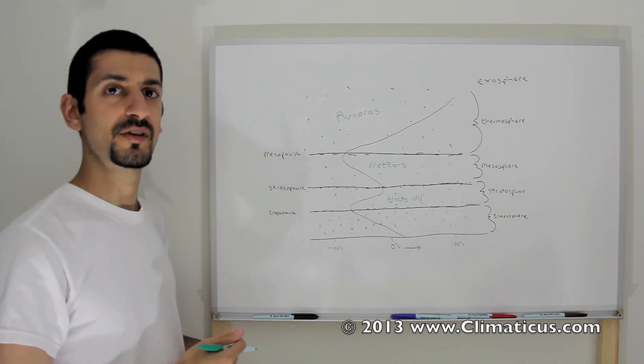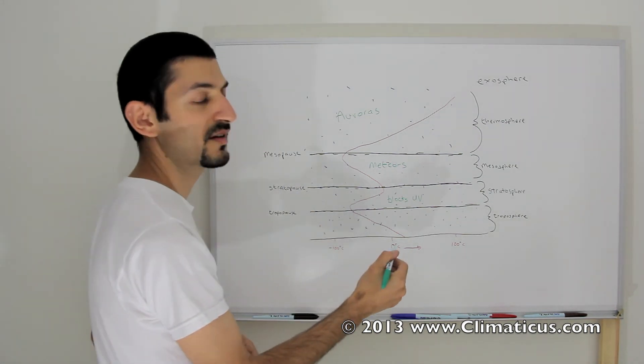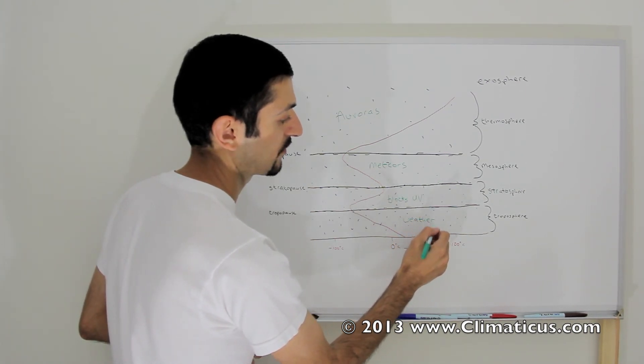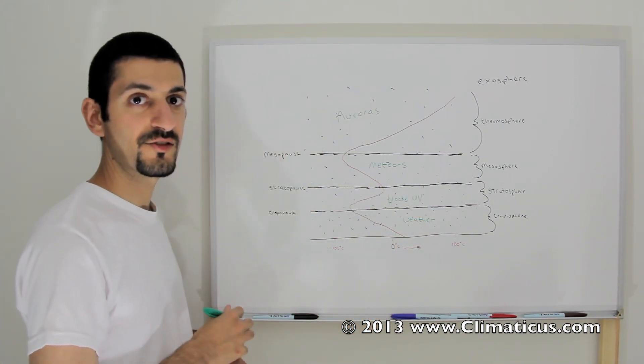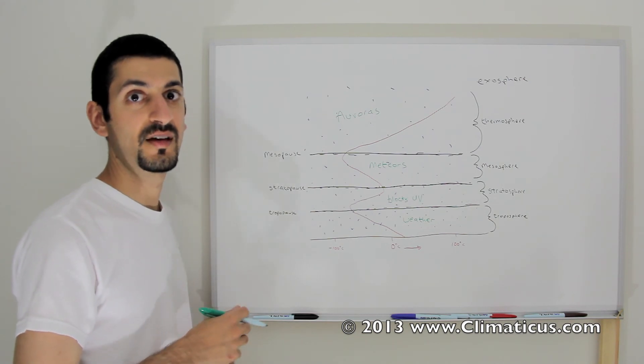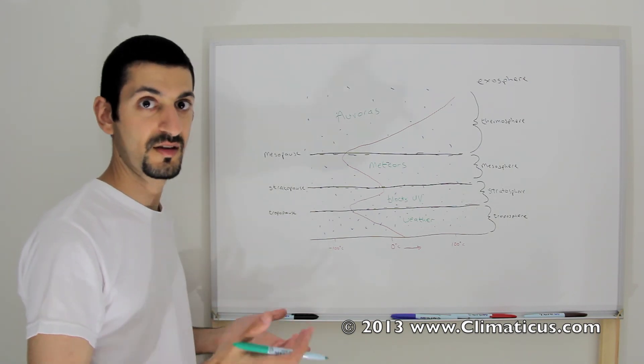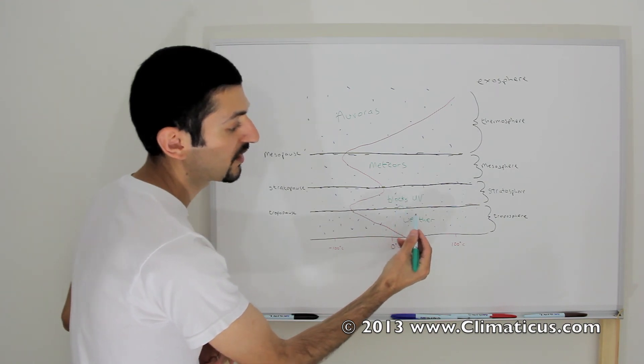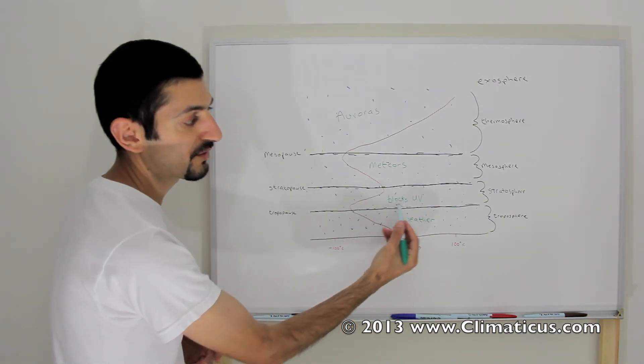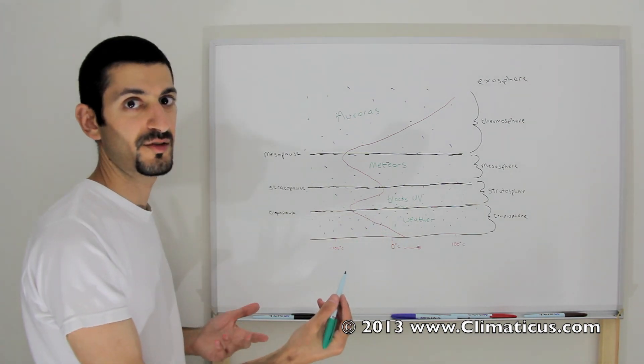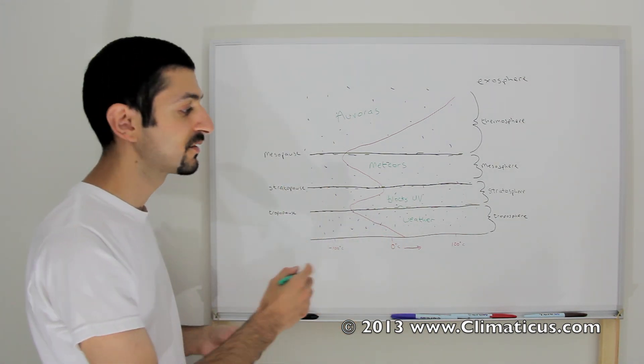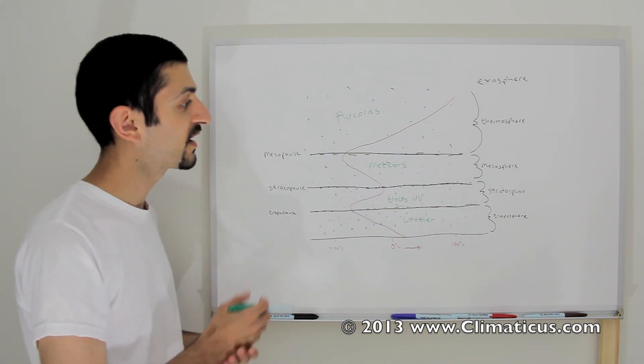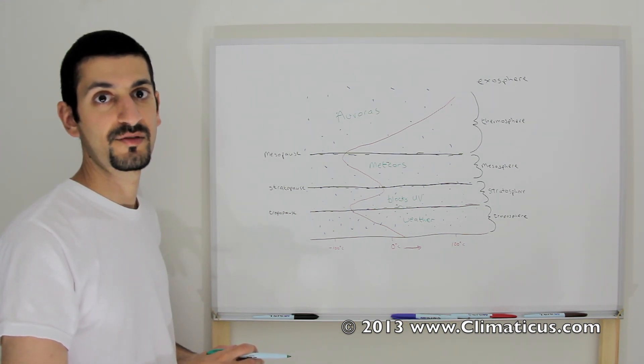Now what about the troposphere? This is where the bulk of the weather occurs. Now, certain situations like an intense updraft in a cumulonimbus thundercloud can breach and have an overshooting top. But other than the lowest part of the stratosphere, from the ground to 40, 50,000 feet in altitude is where most of the weather occurs. And these are the layers of the atmosphere.